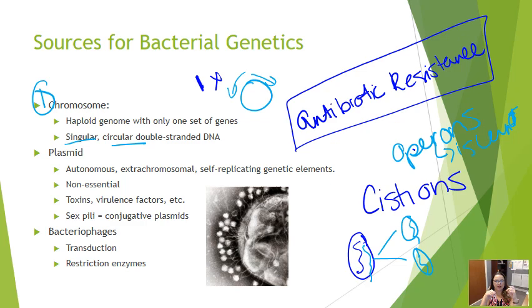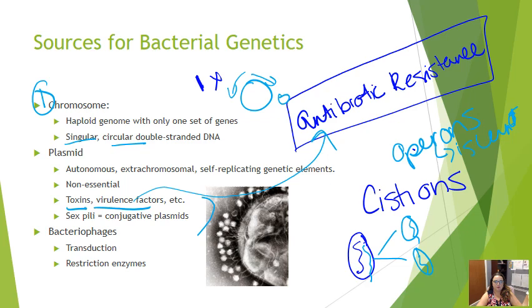The second option is a plasmid. Plasmids are extrachromosomal, autonomous, self-replicating genetic elements. They're not essential for bacterial viability and are smaller than the actual chromosome. Plasmids tend to contain the parts of the bacterium that cause us trouble — toxins, virulence factors that promote colonization through adherence or resistance. A lot of antibiotic resistance mutations are found on plasmids shared across bacteria. Plasmids that promote DNA transfer between bacteria encode a sex pilus and are called conjugative plasmids.